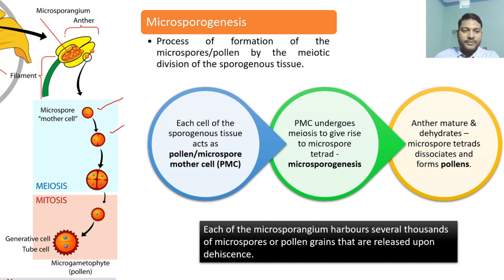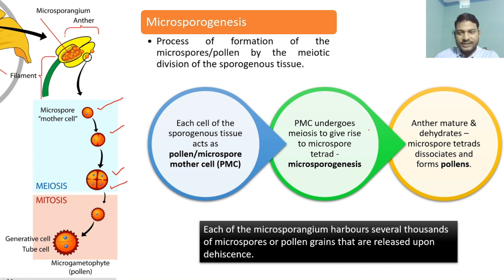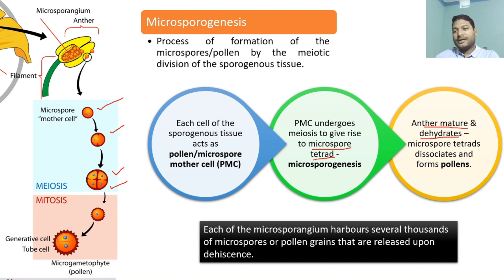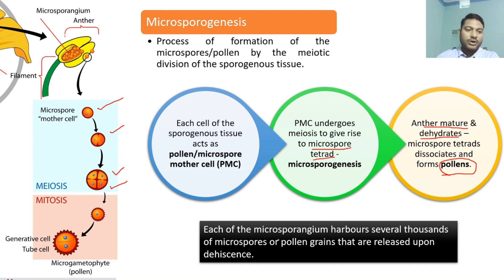The PMC undergoes meiosis I and meiosis II and gives rise to something called the microspore tetrad. Each of these microspores will be connected together. These microspore tetrads will separate out when the anther matures and dehydrates; they will dissociate and give rise to the pollen grains. Remember, each microsporangium harbors several thousands of microspores or pollen grains.